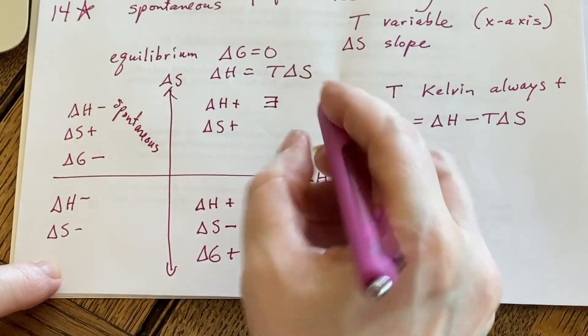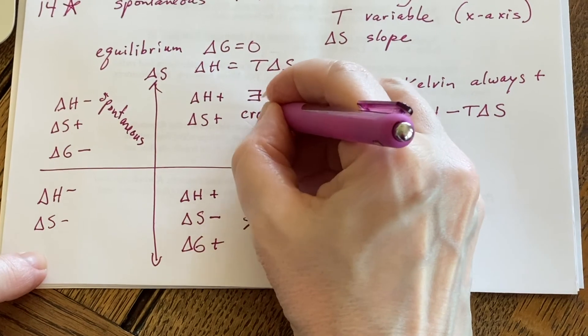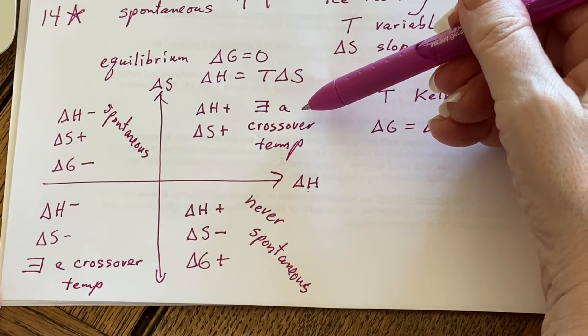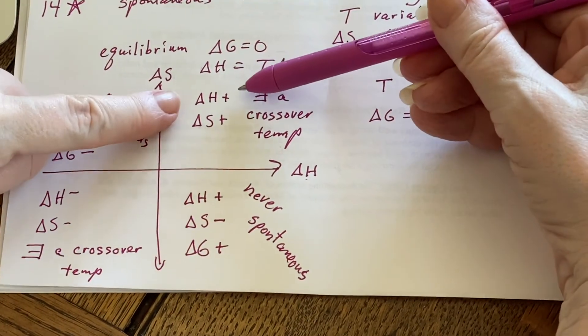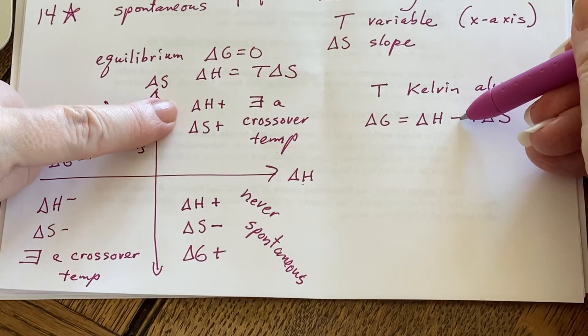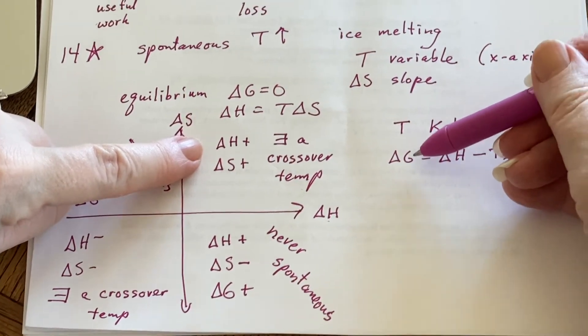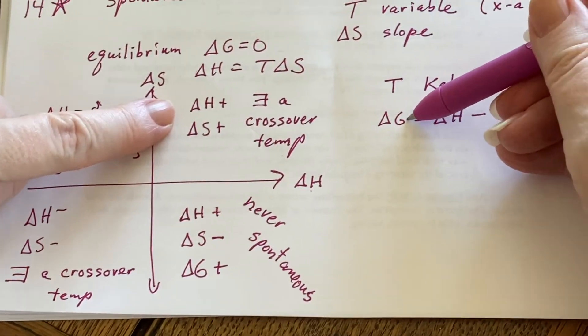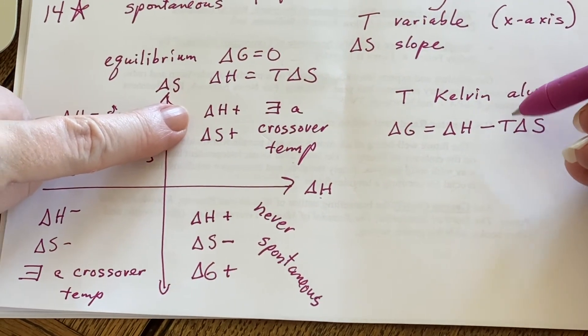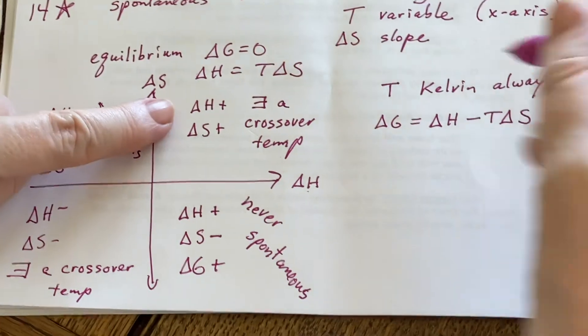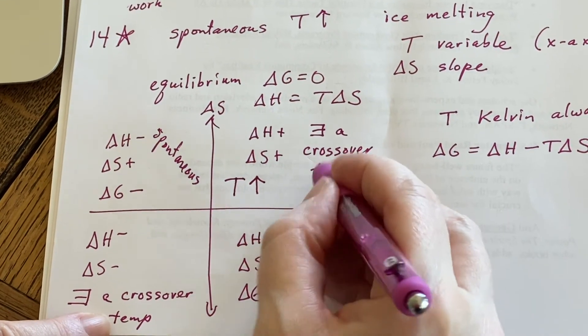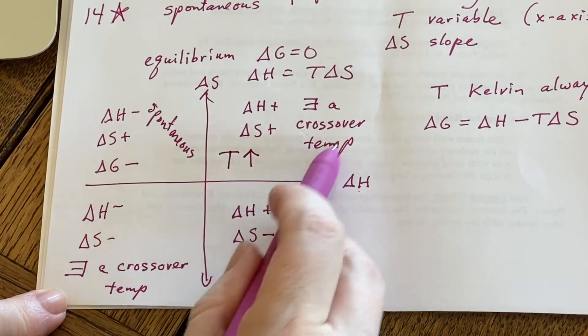So this one, there exists a crossover temperature. Same thing down here, there exists a crossover temperature. So which way is it going? Let's look at this one first. Delta H is positive. Delta S is positive, but here's a negative sign. I'm looking for when delta G will finally become a negative number so that I can say that it is spontaneous. Well, that will happen if I make the temperature high enough. So in this quadrant, I want T to be very high and then I will be able to make this a spontaneous reaction.